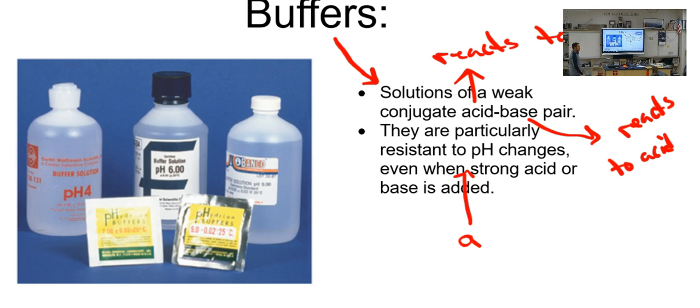You really should read chapter 17. Your desire to not fail the next test should encourage you. If you want to pass the AP test, you should definitely read chapter 17. So what we're talking about now is buffer solutions of a weak conjugate acid-base pair. Buffers are particularly resistant to pH changes when a strong acid or base is added, and we're going to draw this out.